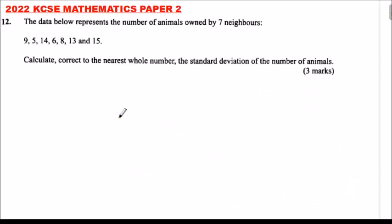2022 KCSE Mathematics paper 2 number 12. The data below represents the number of animals owned by 7 neighbors. We have 9, 5, 14, 6, 8, 13, and 15.